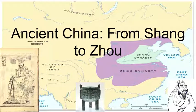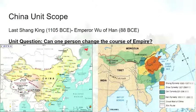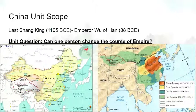Welcome everyone. Today we are going to discuss ancient China from Shang to Zhou. Let's first talk about the scope for the China unit. We're going to go from the last Shang king, which is 1105 BCE, to Emperor Wu of Han, 88 BCE. This could change over the course of the unit, but basically we're going from China at the end of the Shang to China at the middle of the Han when it becomes a global power. The unique question I want all of you to think about throughout this unit is: can one person change the course of empire?